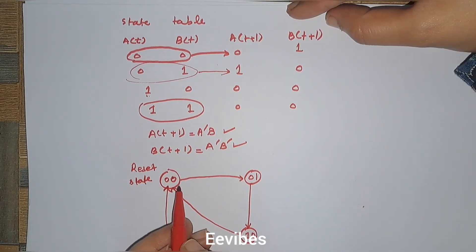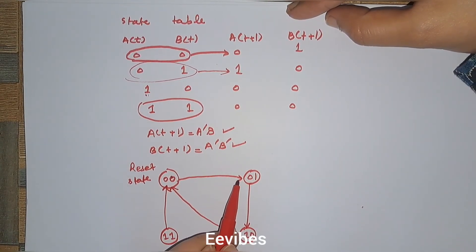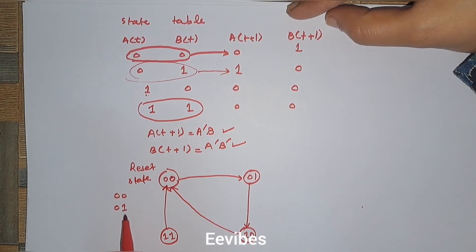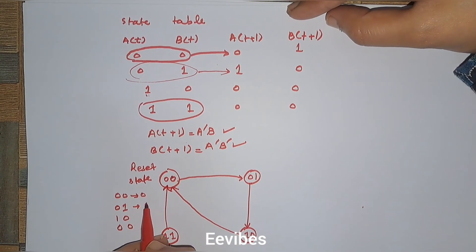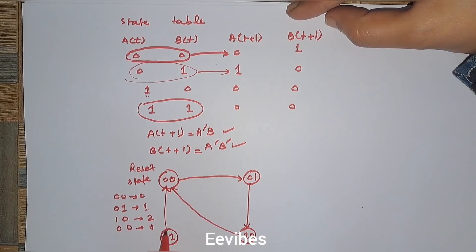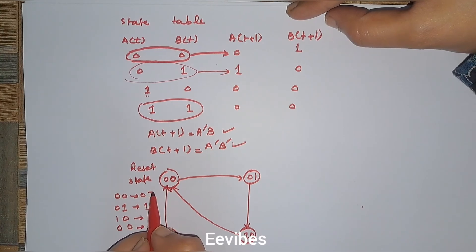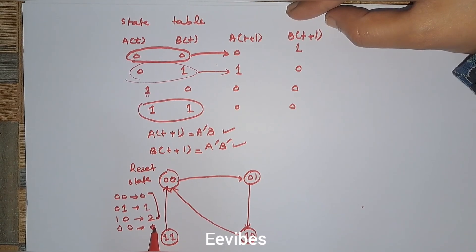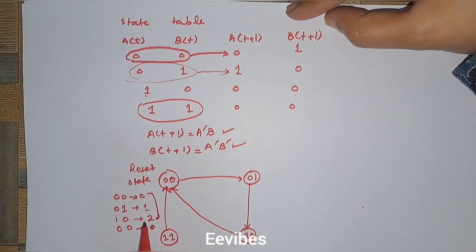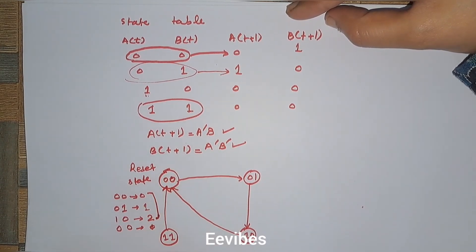Looking at the sequence: from 00 you go to 01, then to 10, then back to 00. The decimal equivalents are 0, 1, 2, and then reset. Any state greater than 3 (i.e., state 11) also resets to 00 automatically. So this circuit is actually counting the sequence 0, 1, 2 — it is a modulo-3 counter. Thank you for watching.